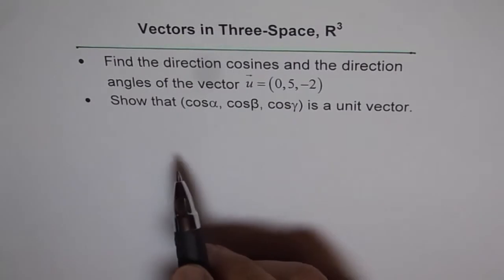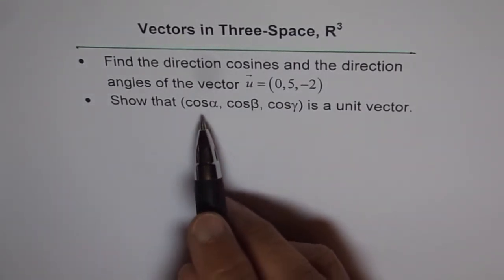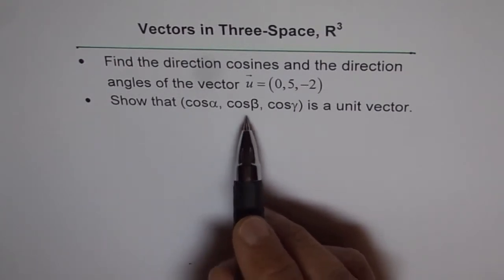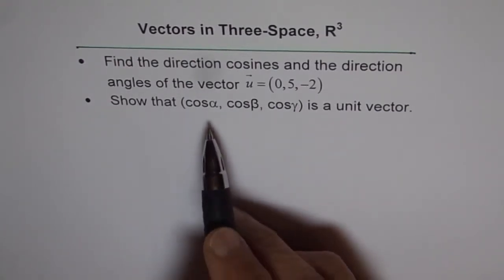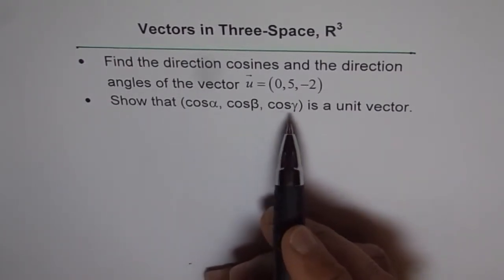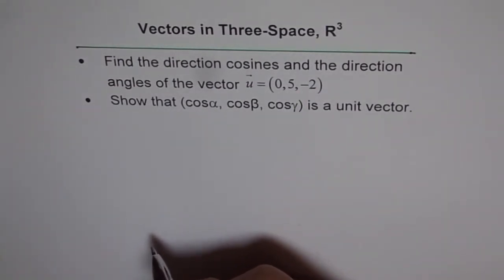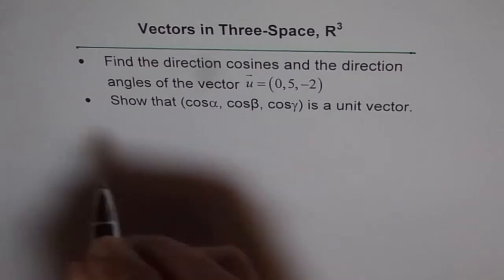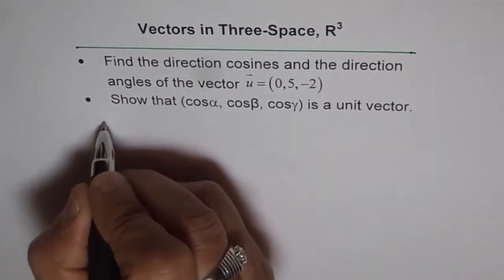We have vector u and we will do some calculations to show how to find cos α, cos β, cos γ, and how to find the angles α, β, γ. Thereby, we will be able to give direction to our vector. So let us start with finding the magnitude of the vector.